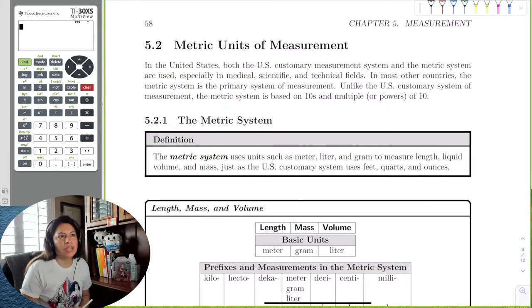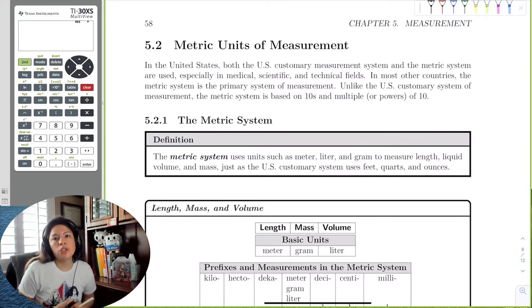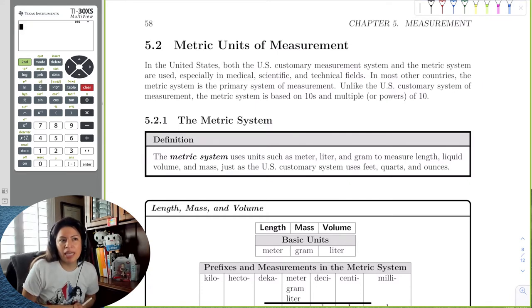In this next section, we get to the metric units. The metric units is really the most commonly used measurements in the world. Like we discussed prior, there were a few places, nations that use the U.S. customary system. But in physics, in the sciences, we use the metric system.